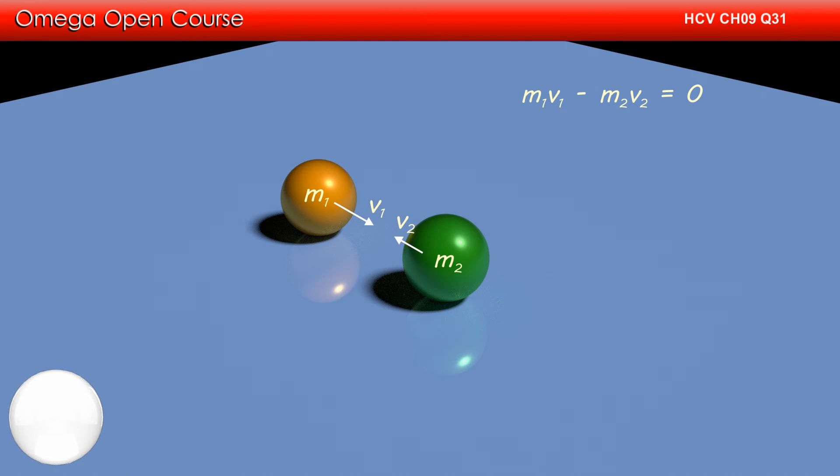As there is no external horizontal force on the system, the momentum must be conserved. Therefore, m1 v1 minus m2 v2 must be equal to 0.